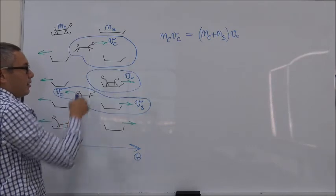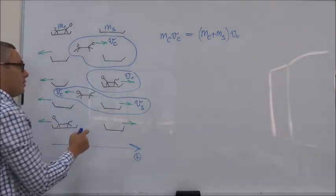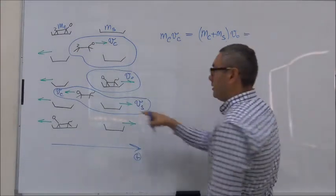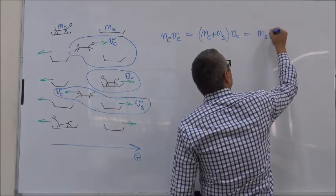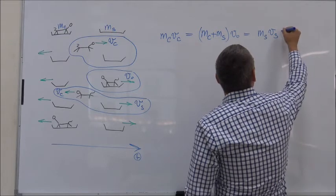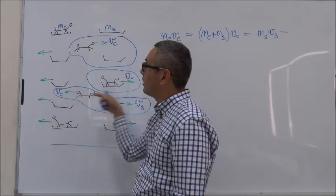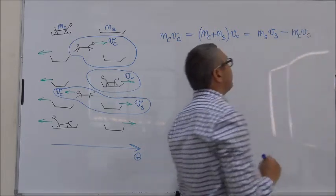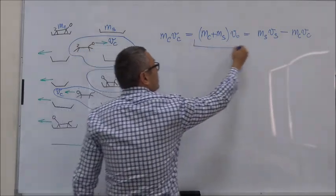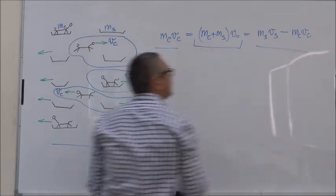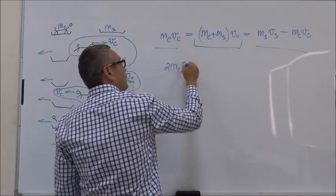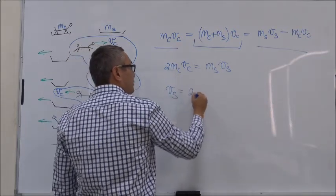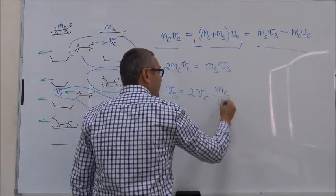Now let's look at the final state. This is the same system but in a different state. The momentum of this system is now equal to the mass of the sled times the velocity of the sled, minus the mass of the cat times the velocity of the cat — the minus sign is because the cat is now moving in the opposite direction. We can ignore the intermediate step and set the initial momentum equal to the final momentum, giving us: 2 times MC times VC equals MS times VS. Therefore, the velocity of the sled equals 2 times VC times MC over MS.